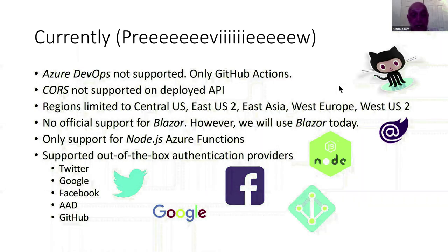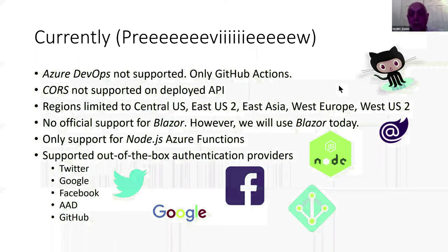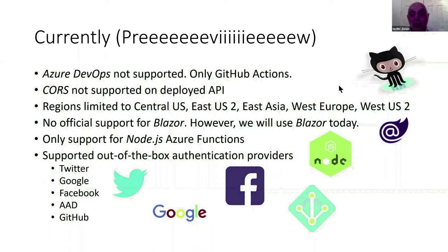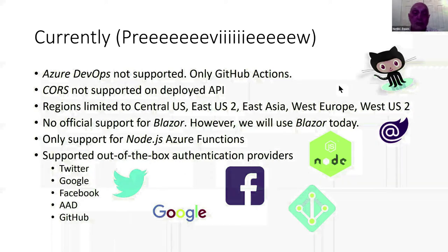Officially there's no support for Blazor; however, today we're going to be using Blazor. With some customization, Blazor works quite well. At the moment, only Node-based Azure Functions are supported; in the future, all other technologies like C# Azure Functions will be supported. The supported out-of-the-box authentication providers at this moment are Twitter, Google, Facebook, Azure Active Directory, and GitHub.